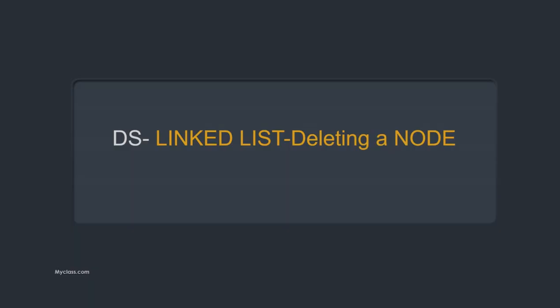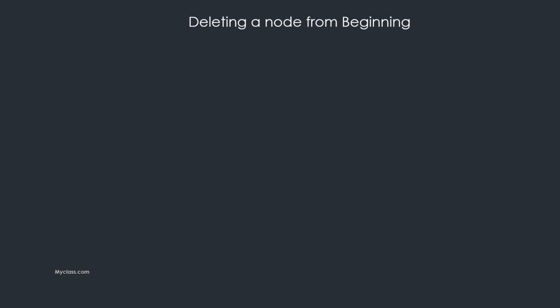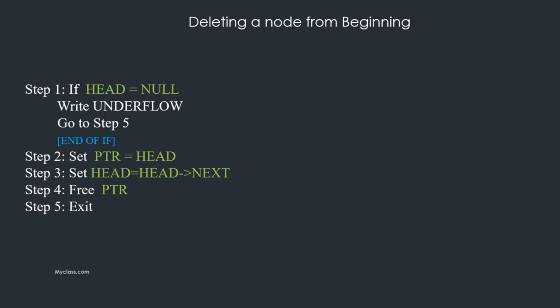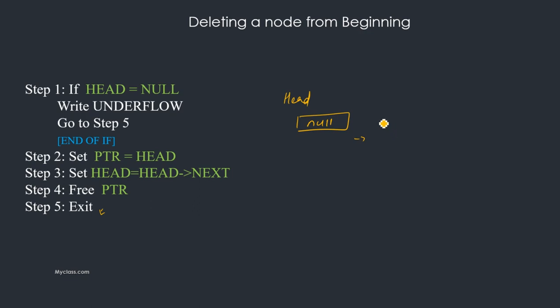New topic: deleting a node from a linked list. We start with deleting a node from the beginning — that is, deleting the first node of a linked list. The algorithm contains only five steps. Step one: if head equals null, underflow — meaning there is no node to delete, the linked list is empty — so we go to step five.